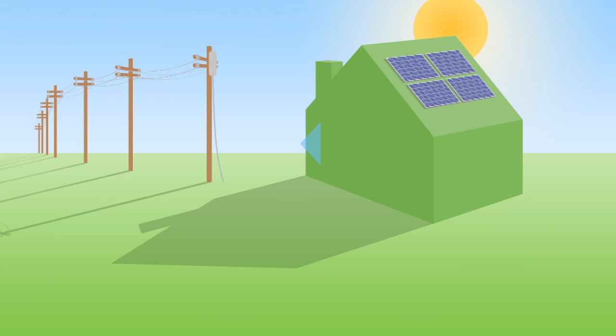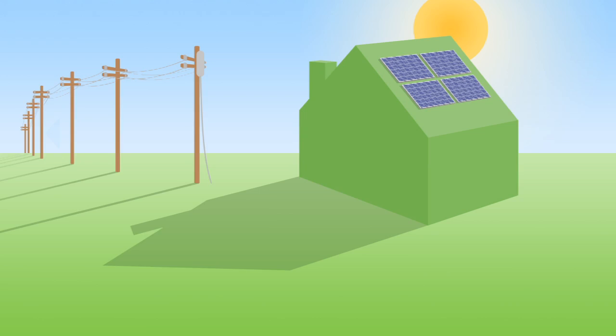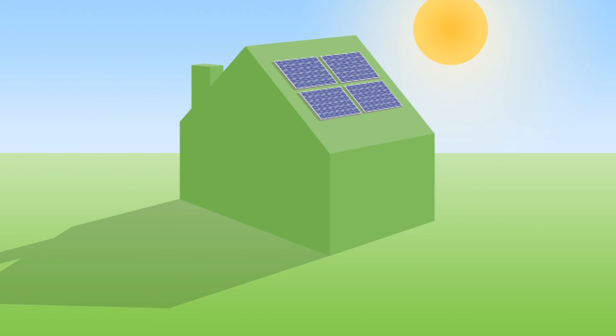Any clean, green solar power you don't use flows back into the grid for someone else to use, which means your solar PV is helping to cut general carbon emissions.